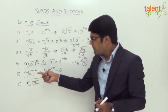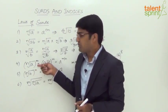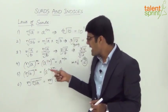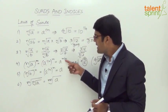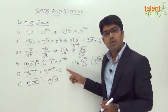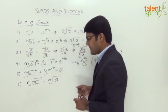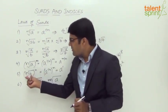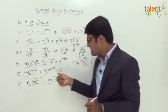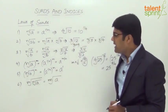Rule number five: the n-th root of a, raised to the power of n — note that here the power is the same as the radical index n — gives m by n becoming n by n, which equals 1. So the result is a to the power of 1, which is simply a. In other words, any n-th root of a, when raised to the same value n, results in a.